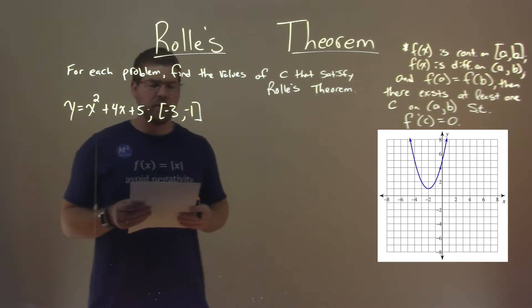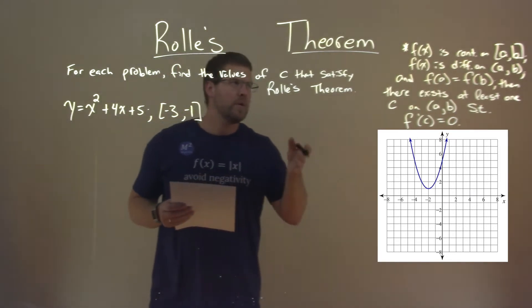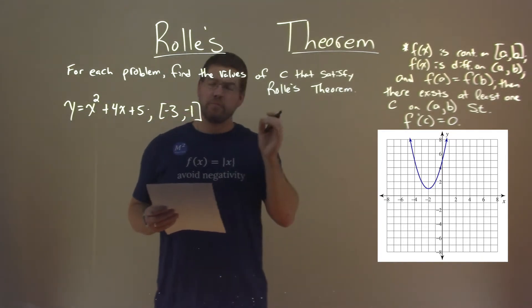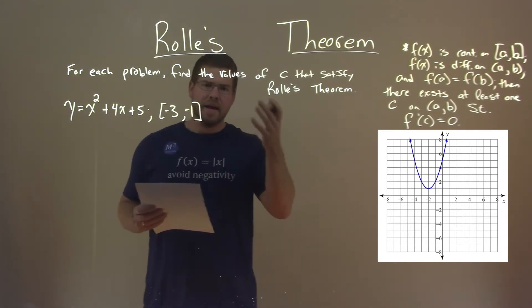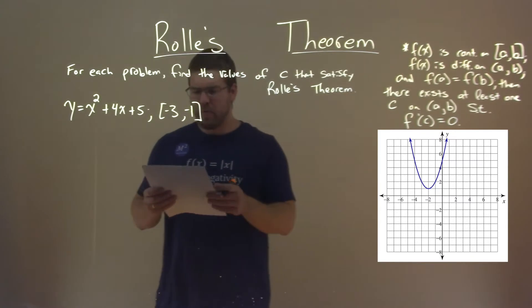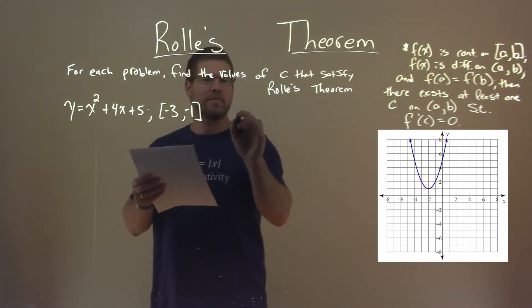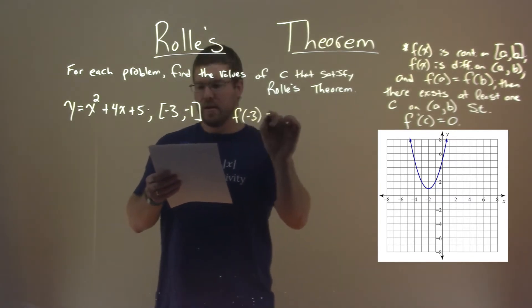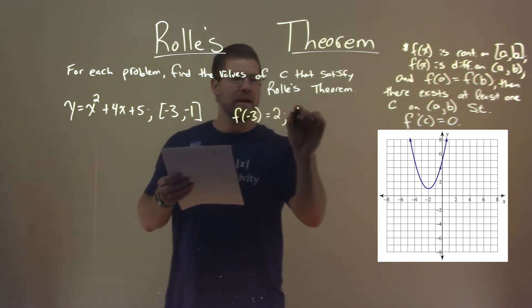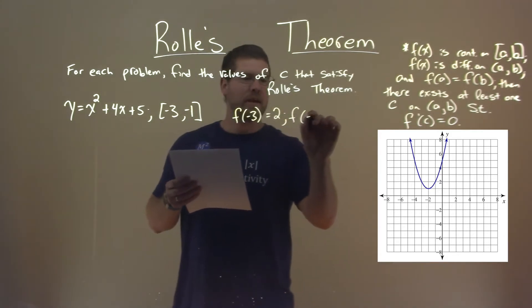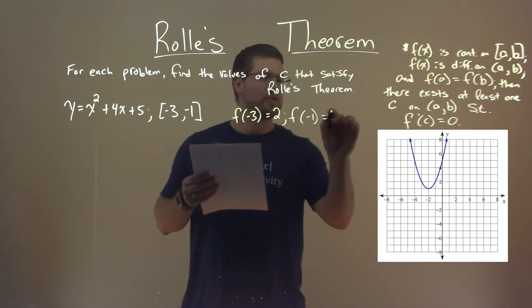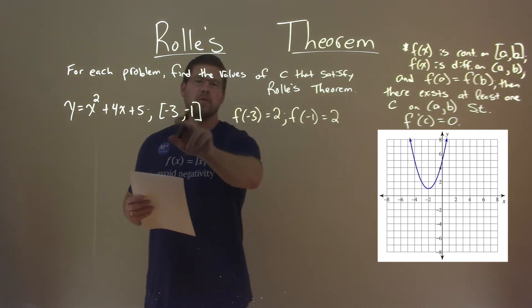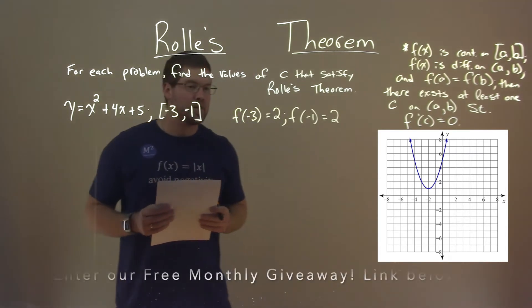This function here, we know it's continuous from a to b, and it's differentiable on a to b as well. f of negative 3 is equal to 2, and f of negative 1 is equal to 2 as well, and we plug those values into our function.